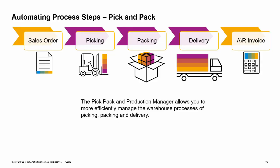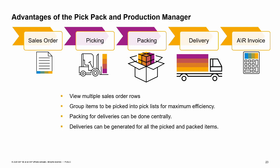Now we take a high-level look at the pick-pack and production manager and how it can improve picking, packing, and delivery. The pick-pack and production manager topics for sales, inventory transfers, and production are covered in detail in other course sessions. The pick-pack and production manager allows you to view multiple sales order rows and group them into pick lists for maximum efficiency. After picking, packing for deliveries can be done centrally, then delivery documents can be generated for all the picked and packed items, so you can more efficiently manage the logistics of picking and shipping sales orders.